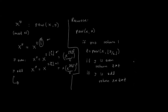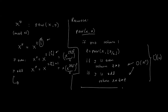The running time of the power method: the products performed here are in the order of n squared. The number of recursive calls — remember, every time we divide by 2, that is one shift, one less bit. If we have n bits initially, this requires order n calls. So the total running time is in the order of n cubed. We can compute x to the y in order n cubed.